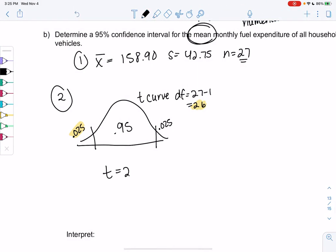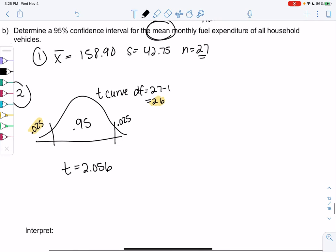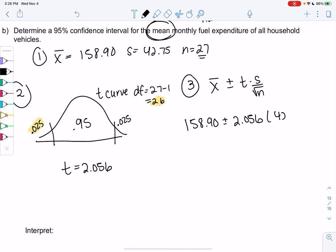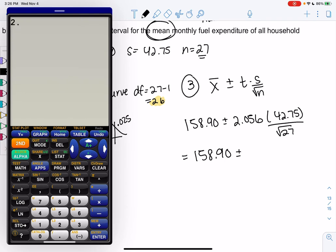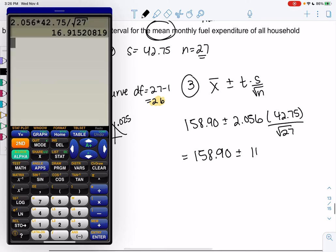That's my t-score. Let's plug into the formula. x̄, because we're in mean land, plus or minus t times s over root n. No proportions, don't mix and match. Let's plug in: 158.90 plus or minus 2.056 times 42.75 all over square root 27. I'm going to plug that plus or minus piece into my calculator: 2.056 times 42.75 divided by square root of 27. We get 16.92.